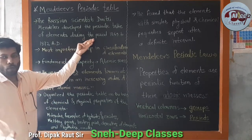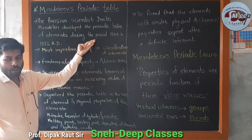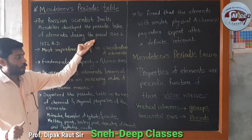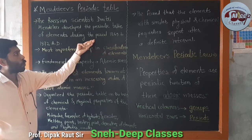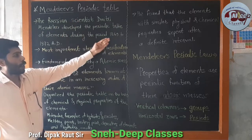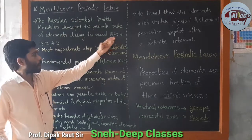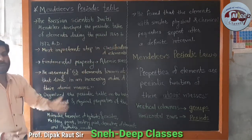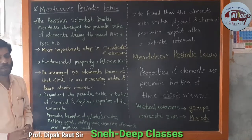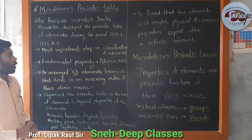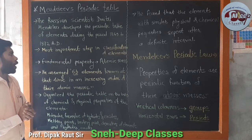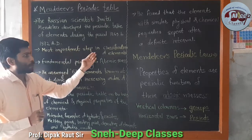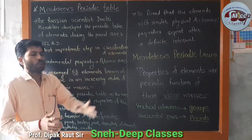We have already discussed Dobereiner first, second Newlands, and now Mendeleev's 1869 to 1872. This study of Mendeleev's is the most important step in the classification of elements.